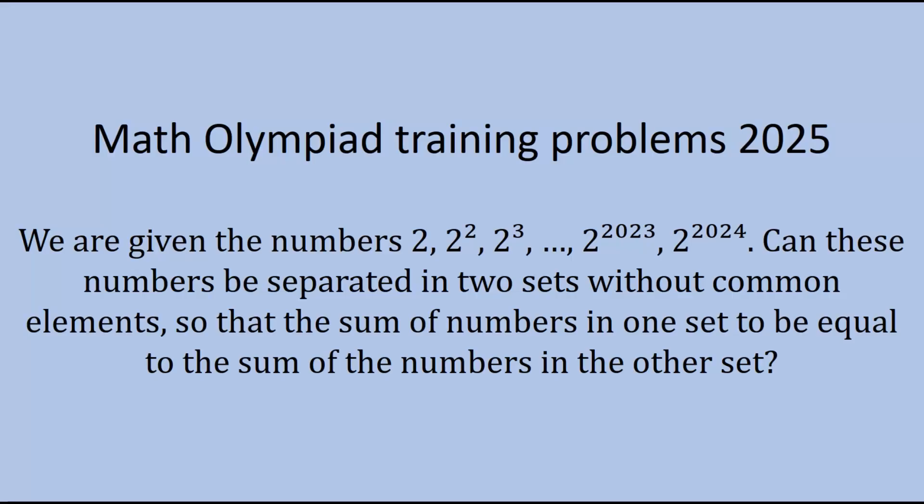Can these numbers be separated in two sets without common elements so that the sum of numbers in one set to be equal to the sum of the numbers in the other set?